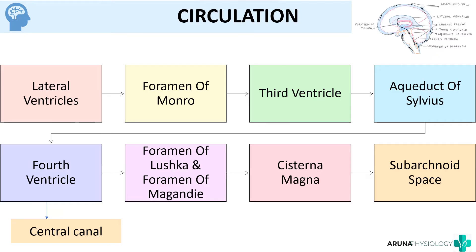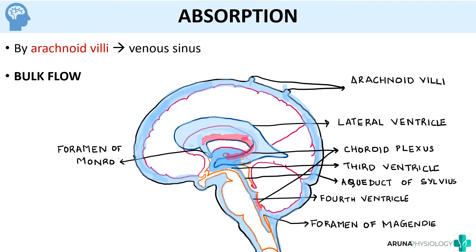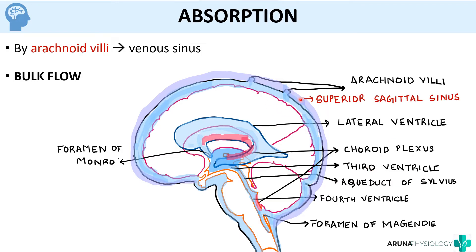CSF is absorbed by the arachnoid villi, which drain into the venous sinus — specifically the superior sagittal sinus — just outside the arachnoid mater. So the CSF essentially goes back into the circulation, returning to the heart. This flow of CSF into the venous sinus is called bulk flow and depends on the CSF pressure.